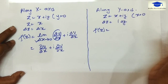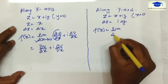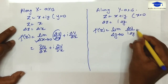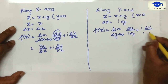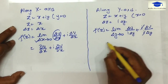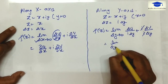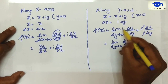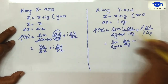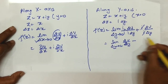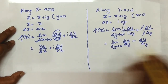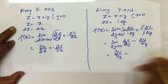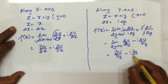So f'(z) is given by the limit as Δy tends towards 0 of Δu over (i·Δy) plus i·Δv over Δy. Multiplying and dividing by i, we can rewrite this as Δv/Δy minus i times Δu/Δy.